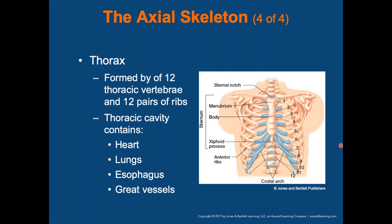The sternum has three components: the manubrium — the upper section — the body in the middle, and the xiphoid process at the lower end. These are the key landmarks of the sternum.